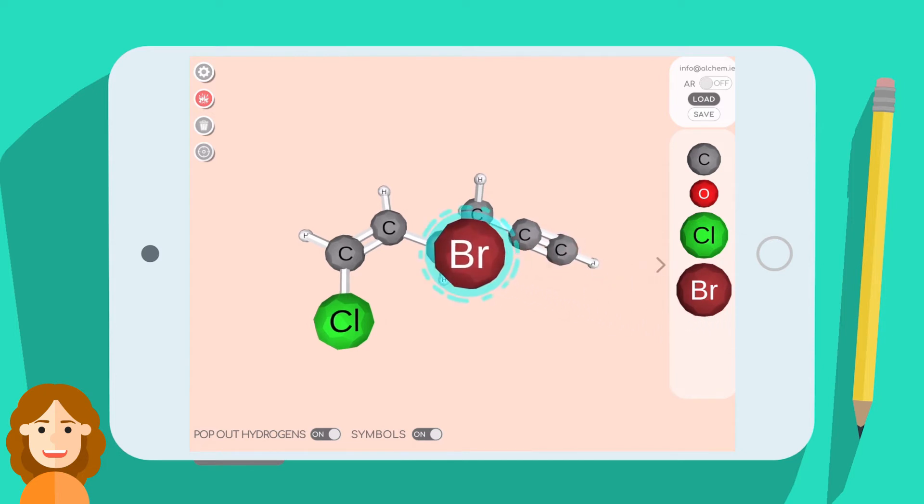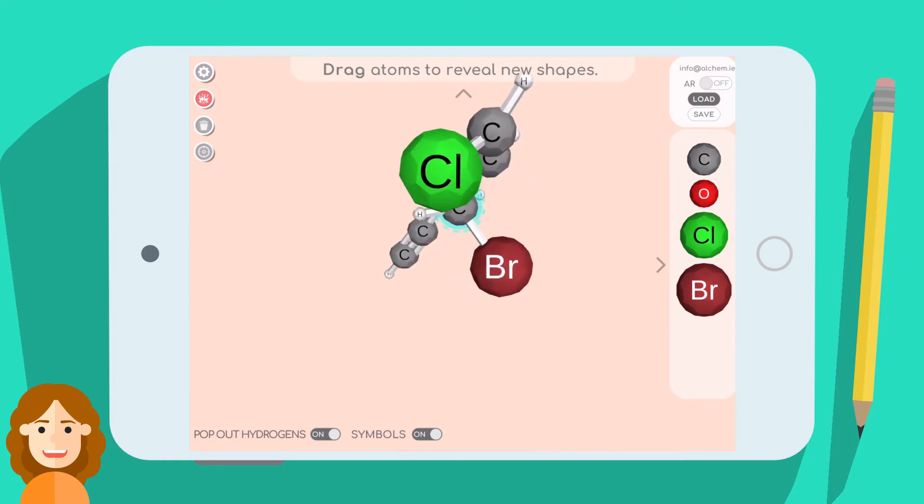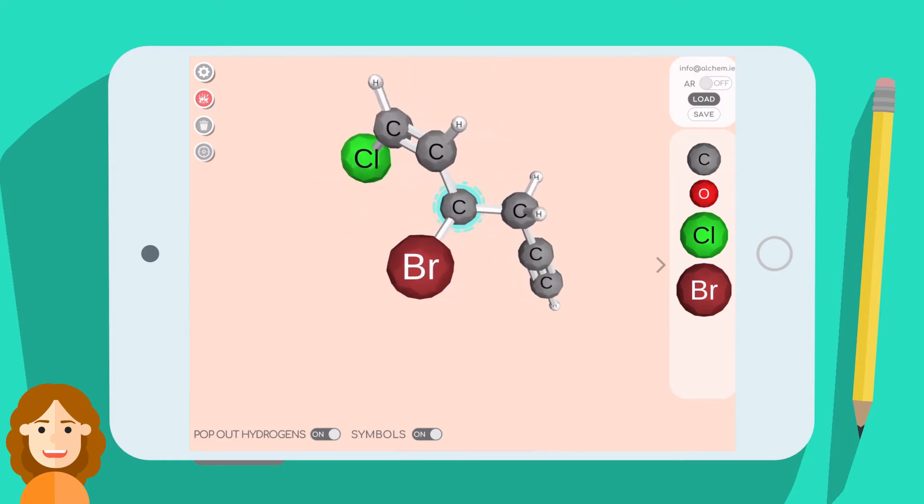Modeler is also a great tool for figuring out the stereochemistry of chiral centers, because you can rotate the molecule so the lowest priority group is in the back.